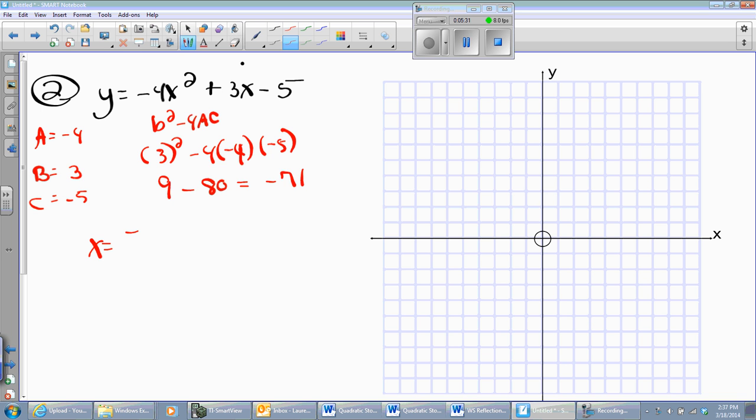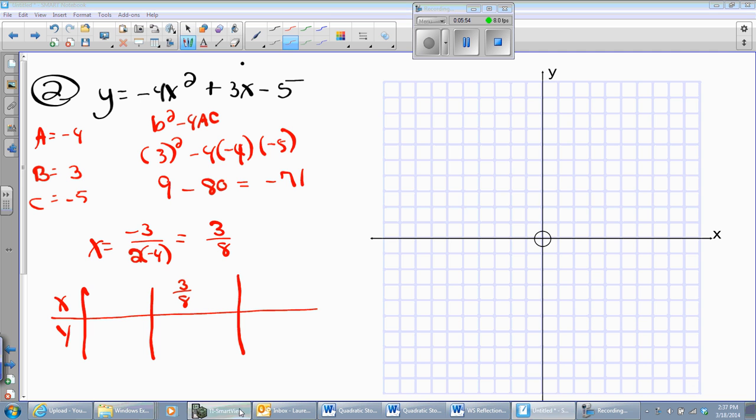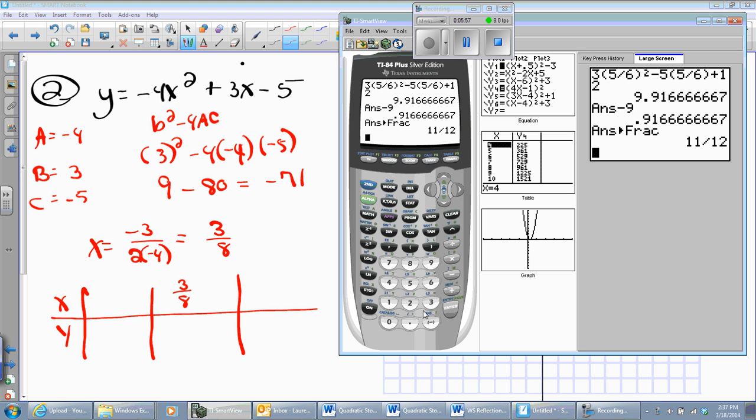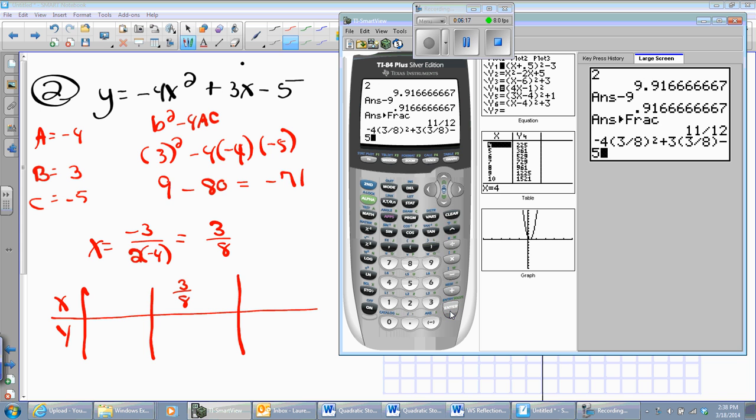So I'll go to my vertex, x equals the negative of b over 2a, which is going to be 3/8. I want to go to my table. Now I know the x coordinate of my vertex is 3/8. I'll figure out the y coordinate of my vertex. So let me get my graphing calculator back up here. There we go. And so I'm going to go negative 4, start a quantity, 3 divided by 8, and I'm going to square it plus 3 times 3/8. And I'm going to subtract 5.